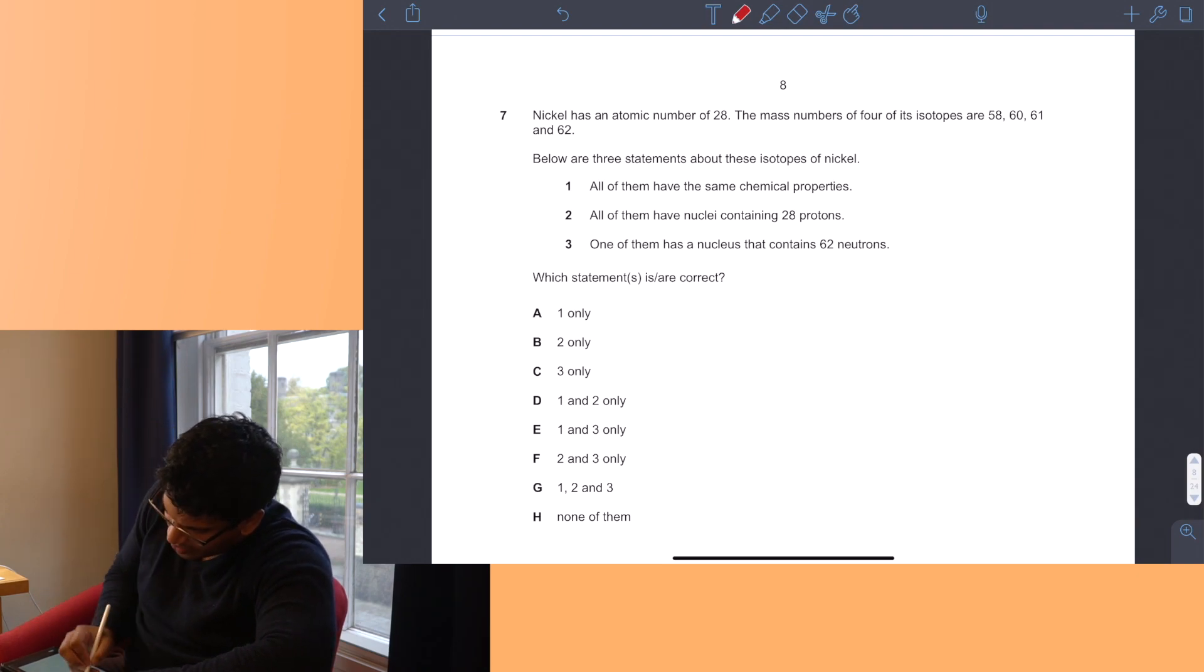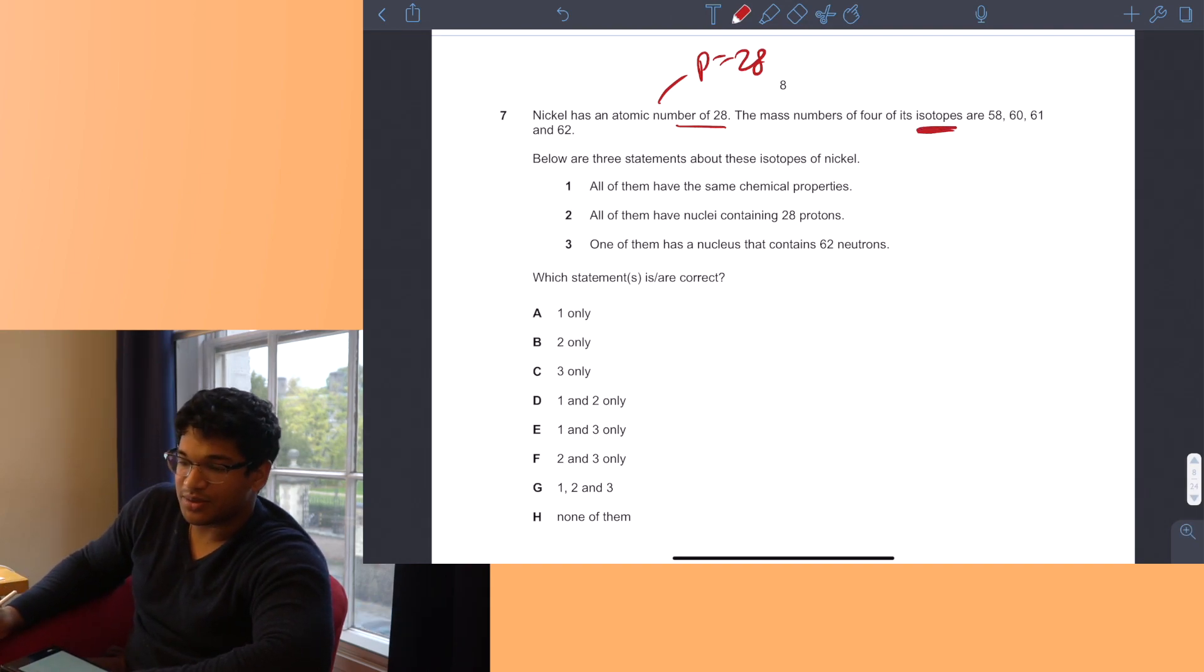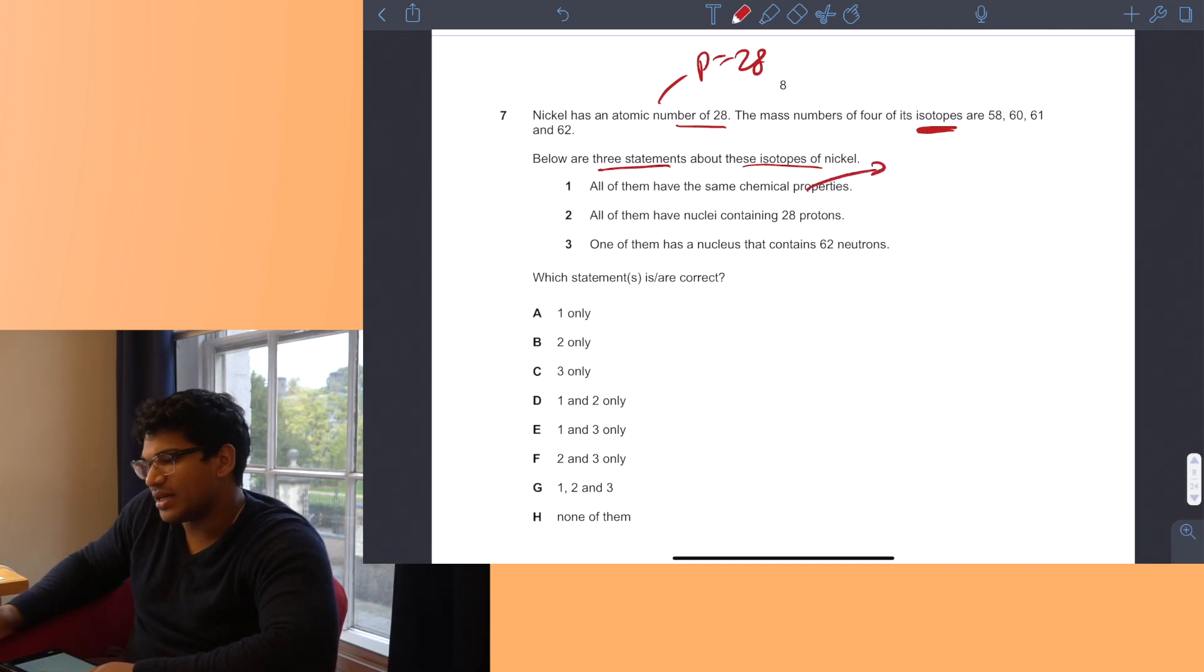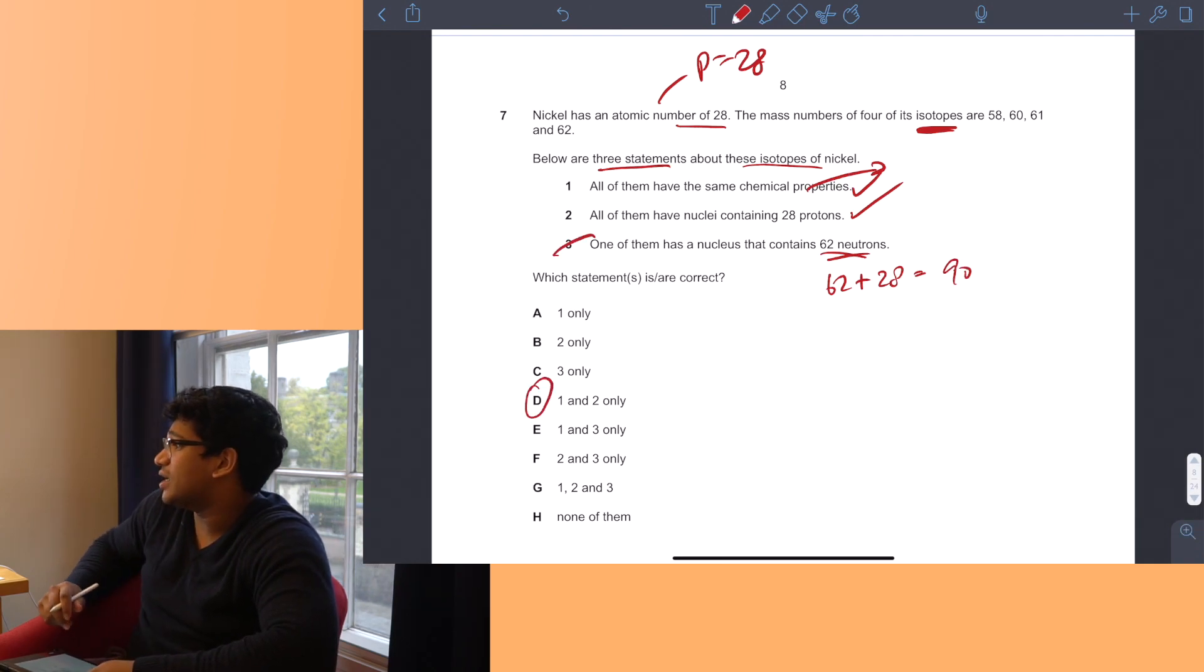Question 7. Nickel has an atomic number of 28, which means the number of protons is 28. The mass numbers of its four isotopes are 58, 60, 61, and 62. Isotopes have the same number of protons but different numbers of neutrons. Three statements: All of them have the same chemical properties - yes, because chemical properties are determined by the number of protons. All of them have nuclei with 28 protons - yes. One has a nucleus with 60 neutrons - if it has 60 neutrons plus 28 protons, that's a mass number of 88, which is wrong. So it's 1 and 2 only, answer D.